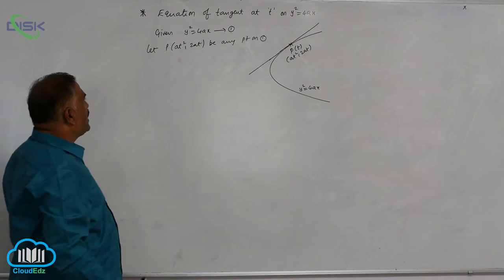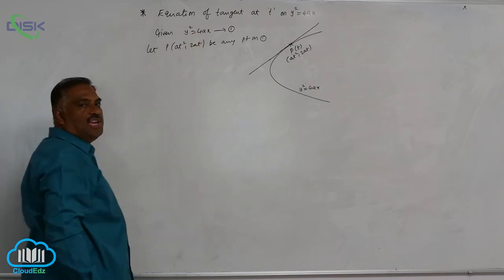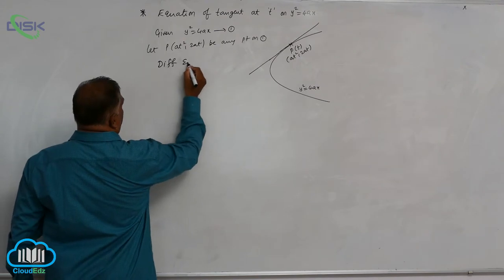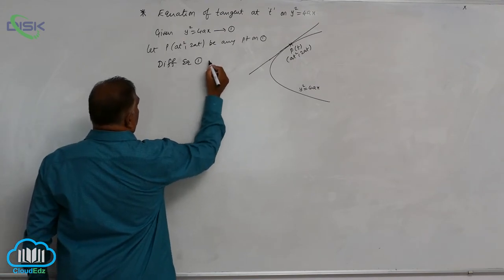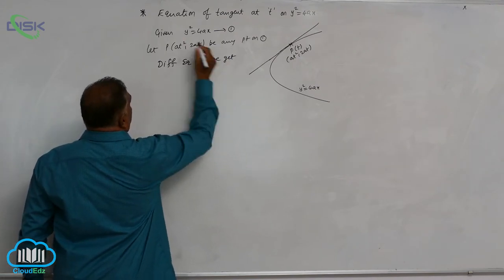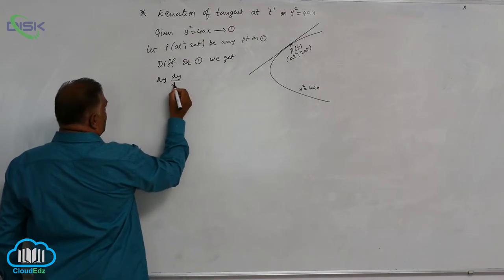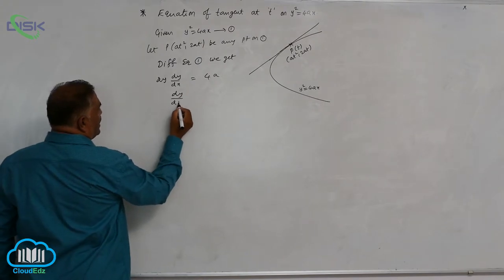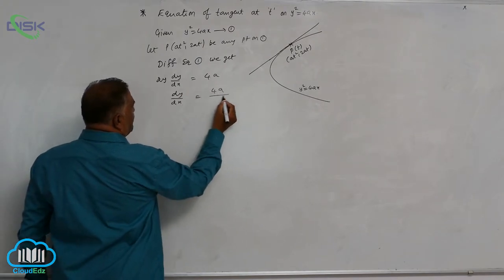Now directly we can go for differentiating equation 1. So differentiating equation 1 we get 2y into dy by dx is equal to 4a. So dy by dx is equal to 4a divided by 2y.